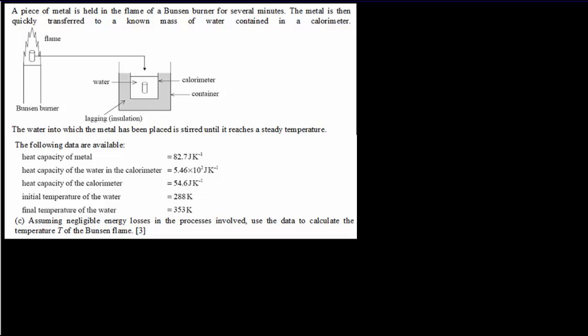Here's a thermal physics question, but you don't need much thermal physics background. If you're good with dimensional analysis, know your units, and understand the law of conservation of energy, you can solve it. A piece of metal in a flame reaches equilibrium temperature T — that's what we want to solve for. When the metal is quickly thrown into water, the water heats from 288 up to 353 Kelvin.